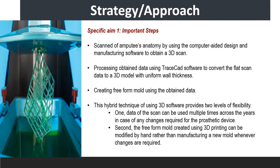In order to develop a free-form mold, the amputee's anatomy will be scanned using computer-aided design and manufacturing software to obtain a 3D scan. The obtained data will be processed using TraceCAD software to convert the flat-scan data to a 3D model with uniform wall thickness, which will then be used to create the free-form mold. The proposed hybrid technique provides two levels of flexibility: first, data generated during the scan can be reused across years for any changes required; and second, the free-form mold can be modified by hand rather than manufacturing a new mold whenever changes are needed.